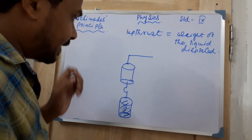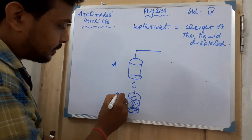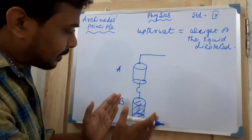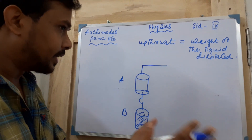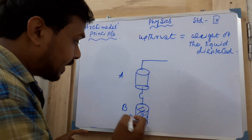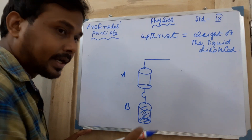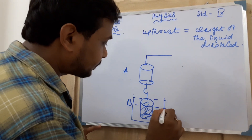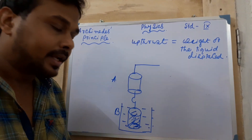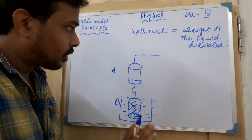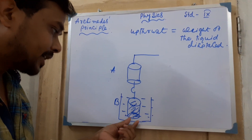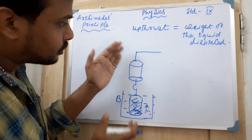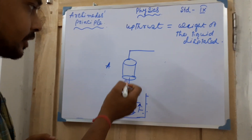Initially, some weight is shown on the physical balance. Now we place the solid cylinder inside a liquid. When placed in the liquid, the weight is reduced — it is lost — because the cylinder experiences an upward directional force. Upthrust acts on it, it tries to go upward, and you can see the weight loss on the balance.